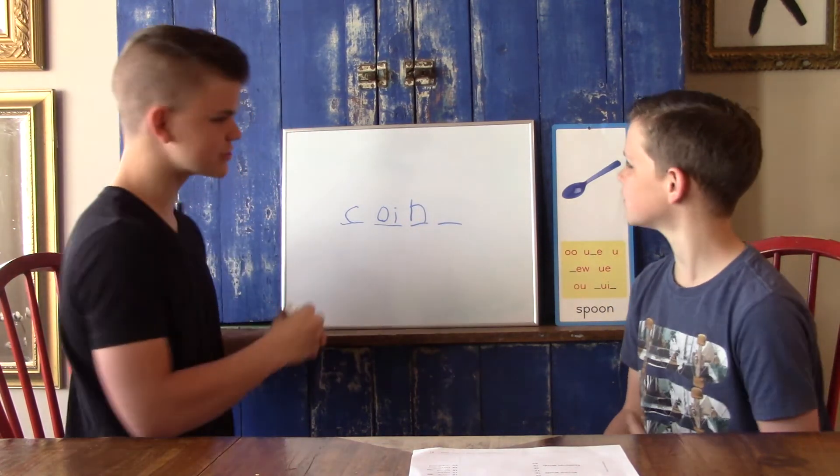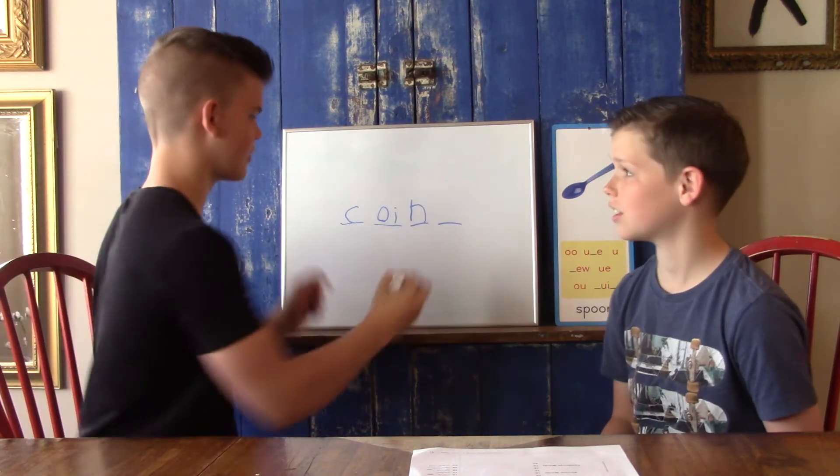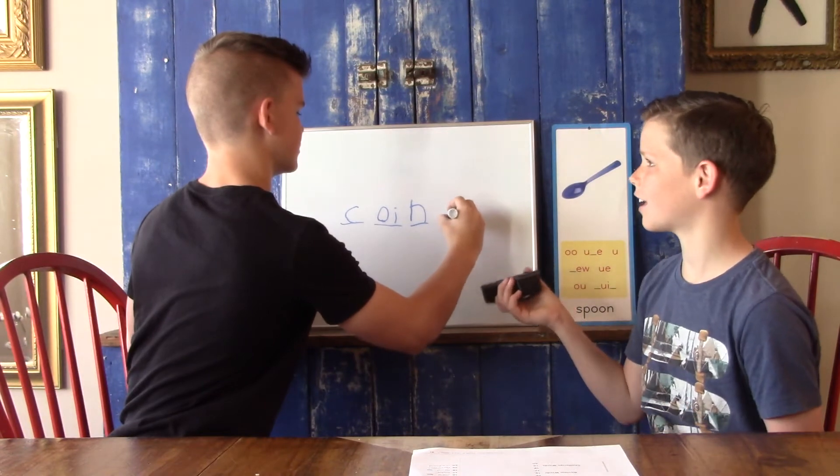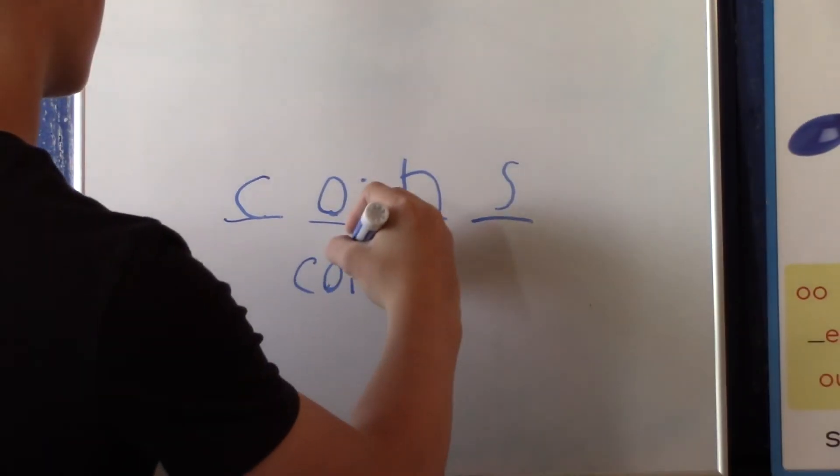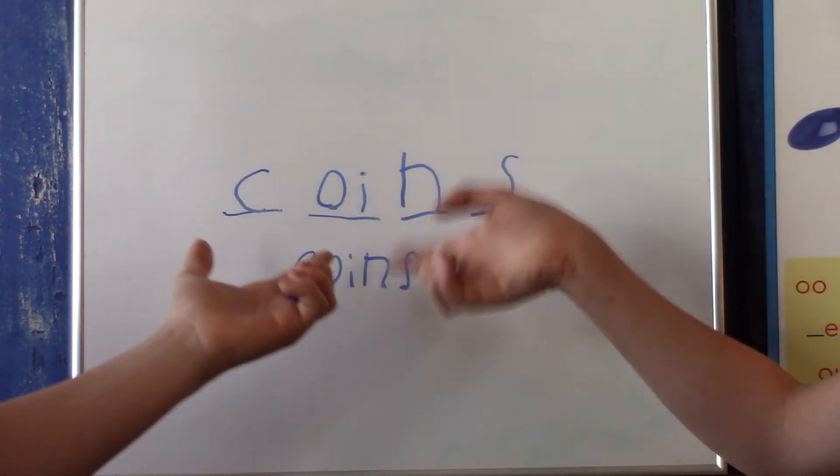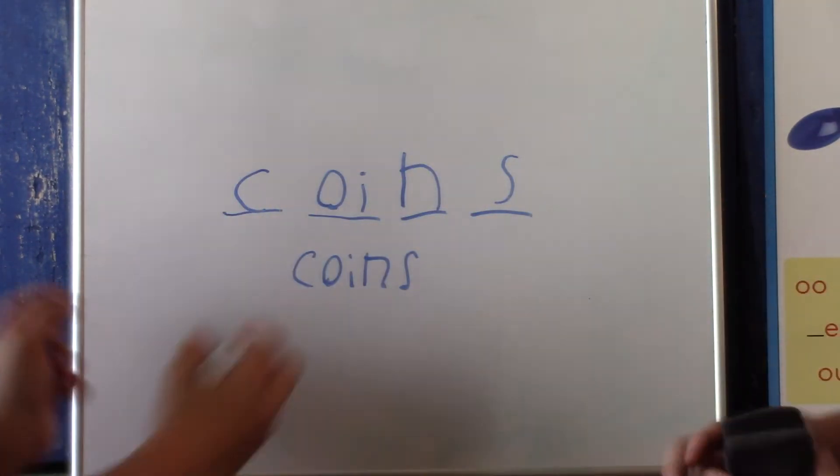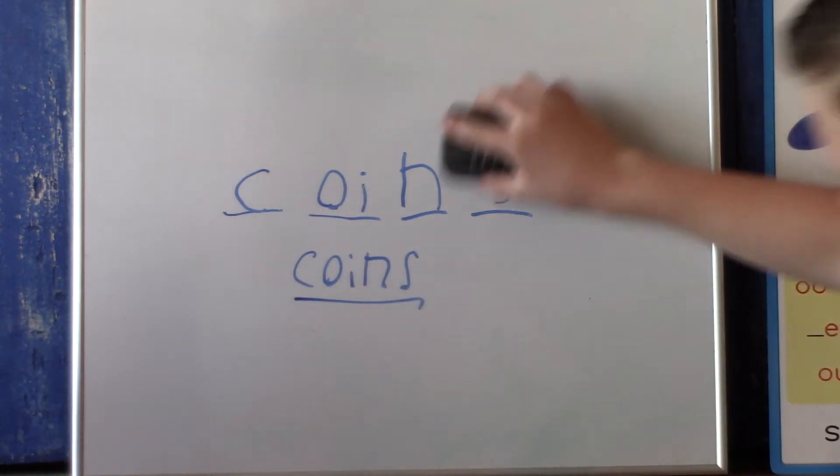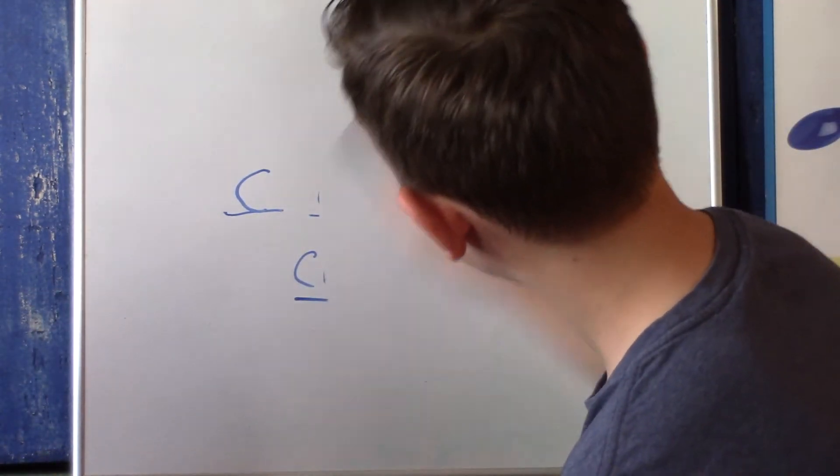And our last sound is going to be S. And how do we spell that? S. Alright. So, we got the word coins. Yes. Let's spell it all together. C-O-I-N-S. Coins. There you go.